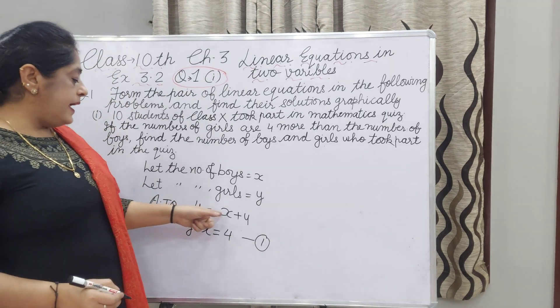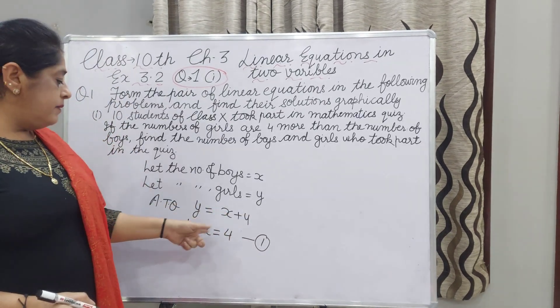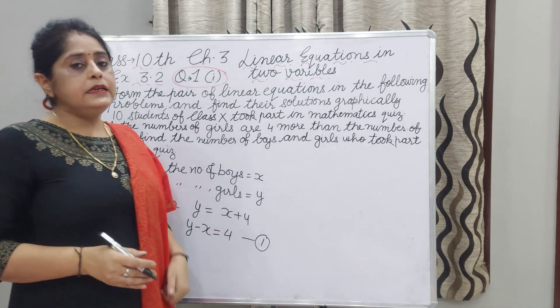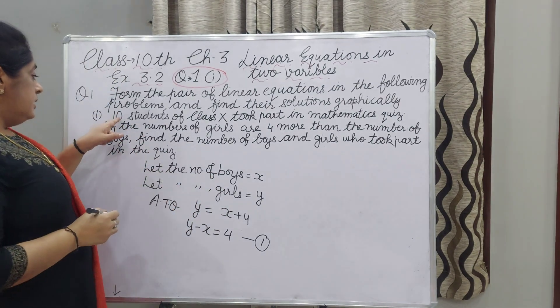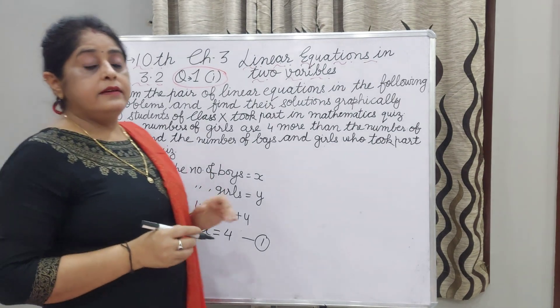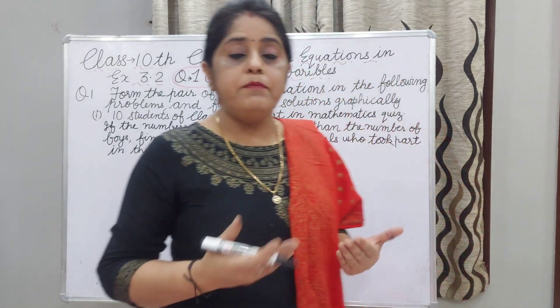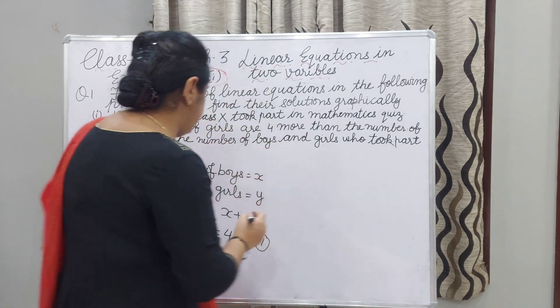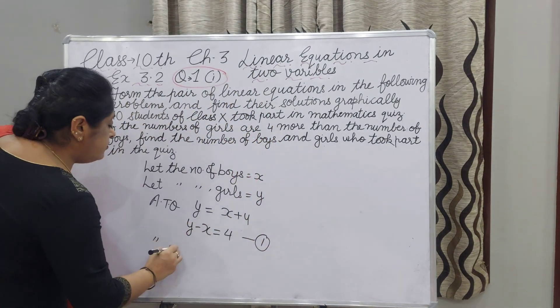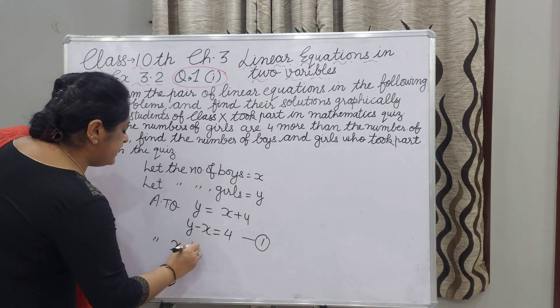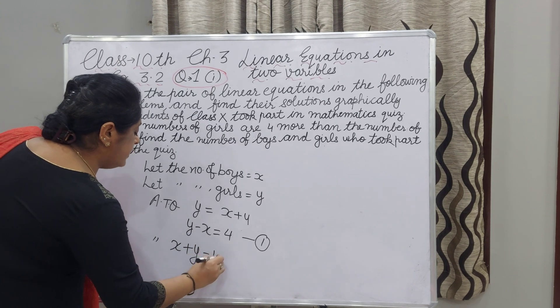You can rearrange this as X minus Y equals negative 4 if you want. Now, the total number of students is 10, so boys and girls together equal 10. According to the question, X plus Y equals 10.